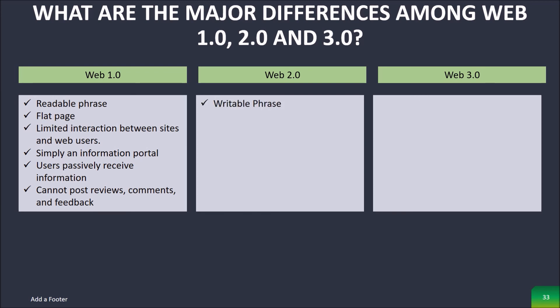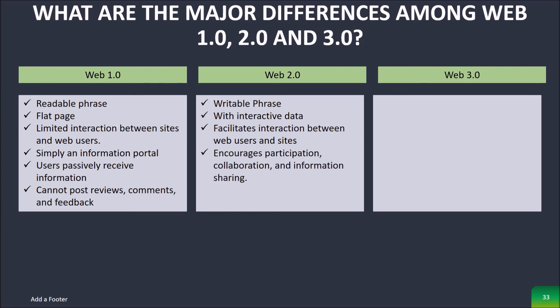Web 2.0 is the writable phase of the World Wide Web with interactive data. Unlike Web 1.0, Web 2.0 facilitates interaction between web users and sites, allowing users to interact more freely with each other. Web 2.0 encourages participation, collaboration, and information sharing. Examples of Web 2.0 applications are YouTube, Wiki, Flickr, Facebook, and so on.